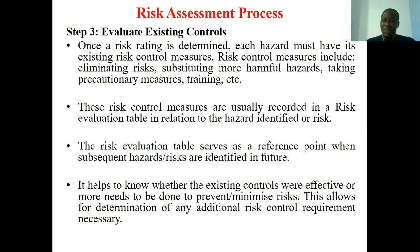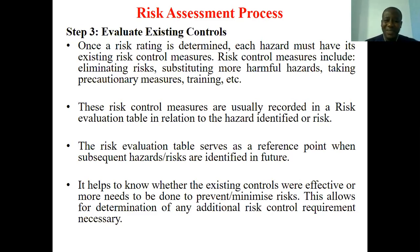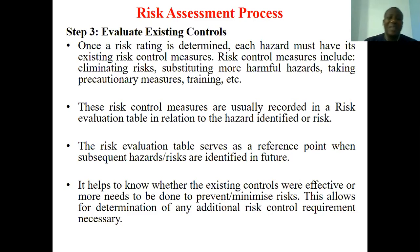Risk control measures include eliminating the risk, substituting more harmful hazards, and taking precautionary measures such as training. The risk control measures are usually recorded in the risk evaluation table in relation to the hazard identification. This table serves as a reference point when subsequent hazard risks are identified in the future. It aids in knowing whether existing controls were effective and if additional action is needed to prevent or minimize the risk, allowing for the determination of additional risk control when necessary.